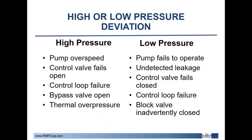Next is high or low pressure deviations. It's important to note that many of these causes were already discussed during the high and low flow deviations, so to avoid discrepancies, these causes should only be discussed in one deviation. If a cause was already discussed in a flow situation, it's acceptable to note no new causes. Common high pressure causes include pump over-speeding, control valves failing open, control loop failure, or thermal overpressure. Low pressure causes include pumps failing to operate, control valves failing closed, control loop failures, and a block valve inadvertently being closed.